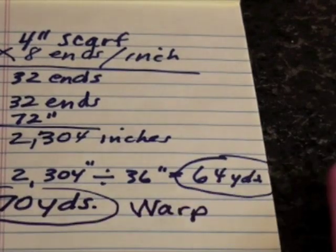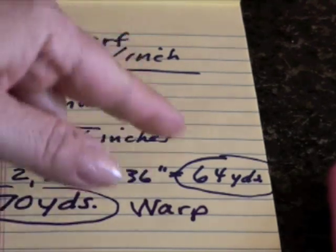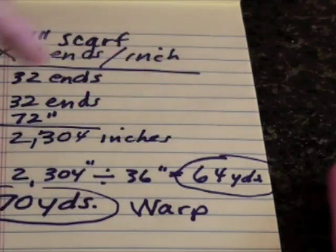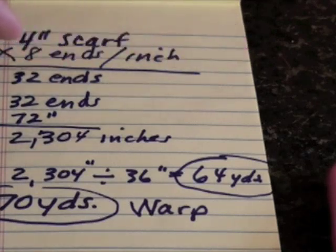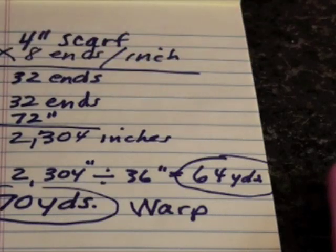For my weft, assuming that I'm doing a balanced weave, which means if I have 8 ends per inch going this way, I'm also going to have 8 picks per inch. That's a balanced weave when there are the same number of warp threads as there are weft threads in an inch.